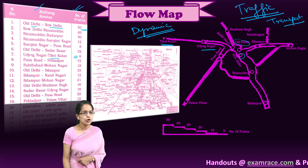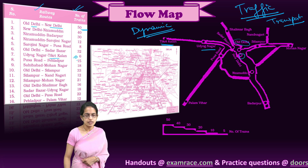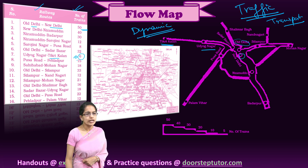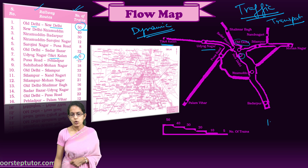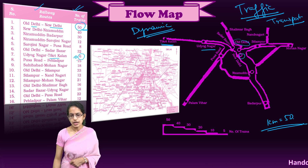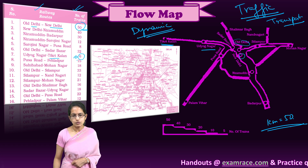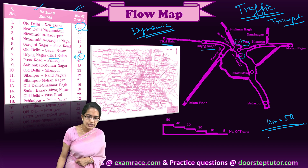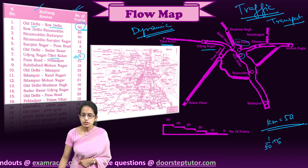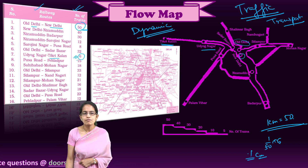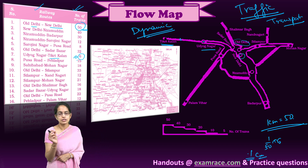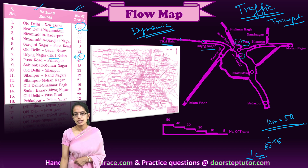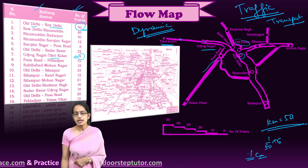Based on the number of trains, passengers, and frequency, we understand a flow map. First we identify the lowest and highest values, then decide on line width. For example, if 1 centimeter represents 50 trains, then for 6 trains the line would be (1/50) × 6 ≈ 0.1 centimeters. The line between New Delhi and Old Delhi would be about 1 centimeter. So in some regions the line is very thin and in others very thick.